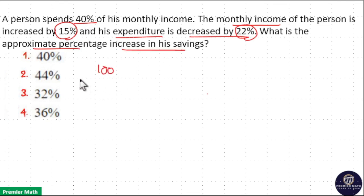Here, consider Rs. 100 as his initial income and out of this, he spends 40%. Then remaining 60% is his savings.